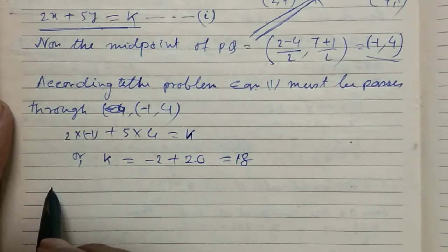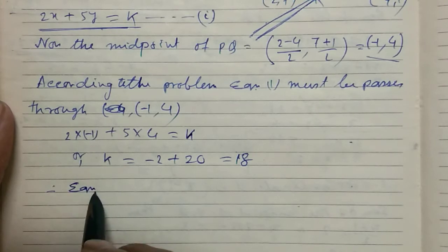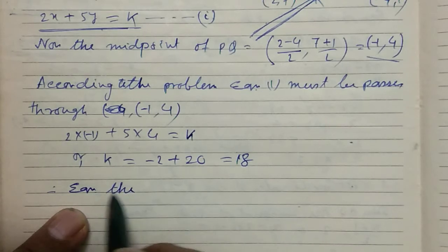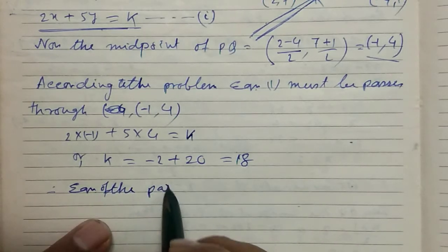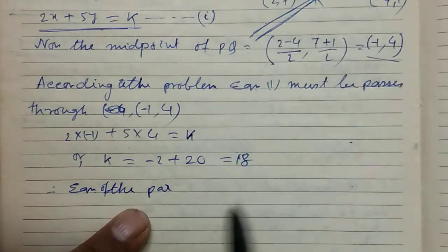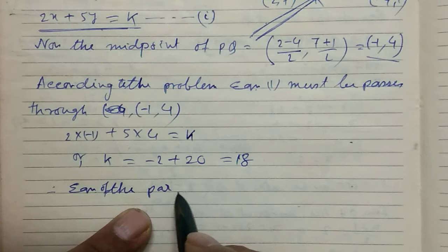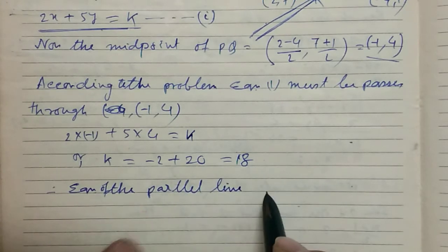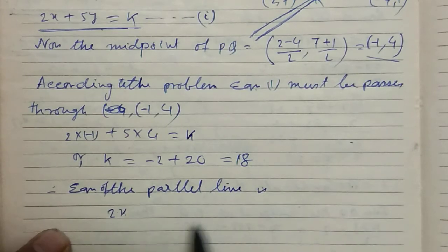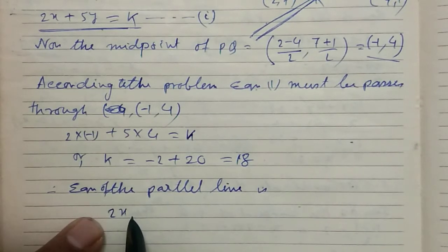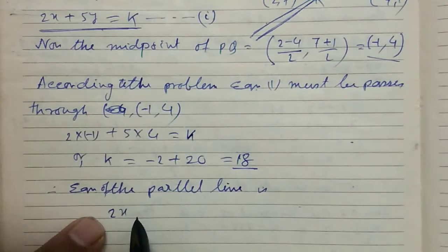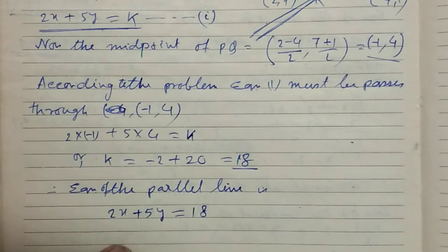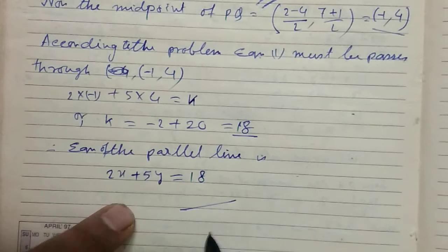Hence, putting the value of k in equation 1, the equation of the line parallel to the given line is 2x plus 5y equals 18, which is the answer.